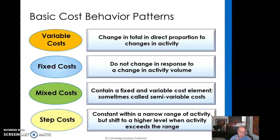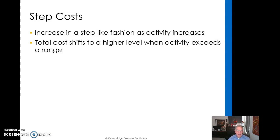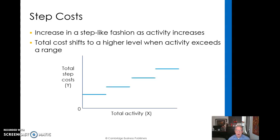We also have step costs, which are constant within a narrow range of activity but shift to a higher level when that activity exceeds the range. For example, if we decide to put on a second shift, that whole second shift represents additional costs — that would be a step cost. Within that narrow range of first-shift activity, costs are constant. Step costs increase in a step-like fashion as activity increases, and total costs shift to a higher level when activity exceeds a range — first shift, second shift, third shift.